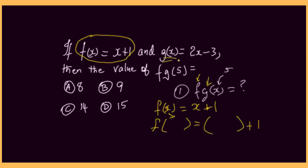So where I have x, I'm going to replace x with the g function. Now the g function, which is right here, g of x, is equal to 2x minus 3. So I'm going to let 2x minus 3 represent g of x. So 2x minus 3 — I'm going to replace x with it. What I'm really saying here is f of g of x, because 2x minus 3 is g of x.